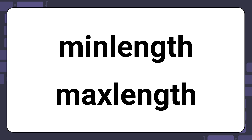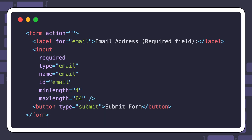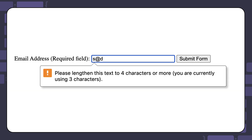Other forms of validation for email inputs are to use the minlength and maxlength attributes. Here is an example using the extra validation. The minlength and maxlength attributes are used to set the minimum and maximum length in characters for the email input. If you don't include the minimum length or exceed the max length of characters, the browser will show an alert message as seen here.